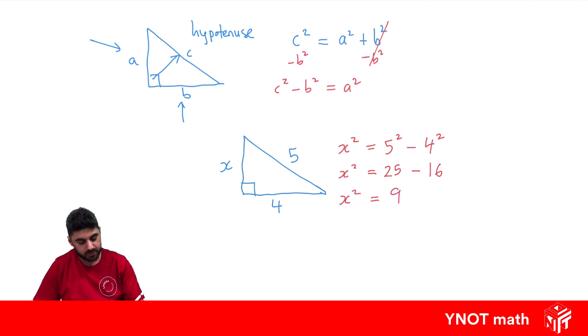And we can't forget to square root, because we want to find X not X squared. So we'll square root both sides of this equation. The square cancels out with the square root because they're opposites, and the square root of 9 is 3. And we've successfully found the shorter side. So let's look at one more example.